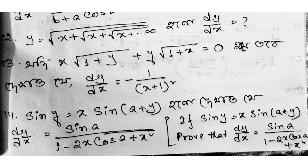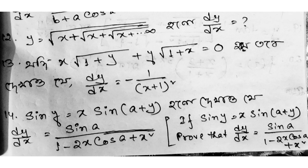Question 12: sin y equals x sin(a plus y) — show that dy/dx equals sin a divided by (1 minus 2x cos a plus x squared). Question 13: if y equals x divided by (x plus 2), show that x times dy/dx equals y times (1 minus y). Question 14: if x equals t minus (e to the power minus t squared) divided by (2t squared), prove that t times dx/dt plus 2x equals 1 over 2t plus e to the power minus t squared.